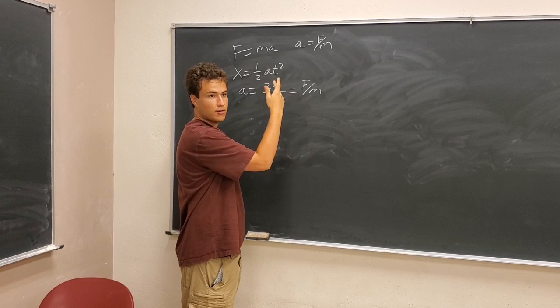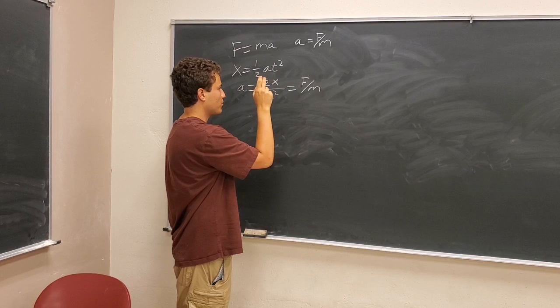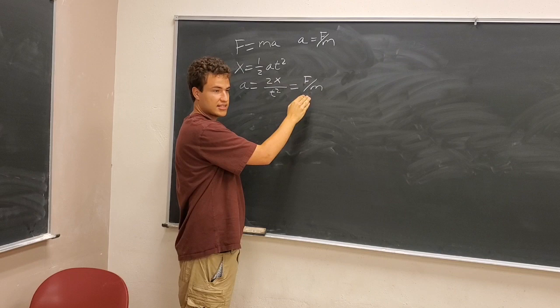So, in our first experiment, we showed that A equals F over M, regardless of what force it was, as shown through two different forces. However, for our next experiment, we're going to show the same principle with changing masses. So, whenever mass increases, acceleration is actually going to decrease based on this formula.